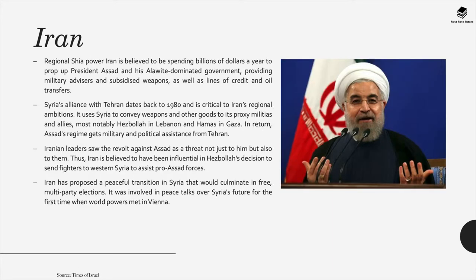Another pro-Syrian government country is Iran. The regional Shia power Iran is believed to be spending billions of dollars a year to prop up President Assad and his Alawite-dominated government, providing military advisers and subsidised weapons, as well as lines of credit and oil transfers. Syria's alliance with Tehran dates back to 1980 and is critical to Iran's regional ambitions. It uses Syria to convey weapons and other goods to its proxy militias and allies, most notably Hezbollah in Lebanon and Hamas in Gaza. In return, Assad's regime gets military and political assistance from Tehran.